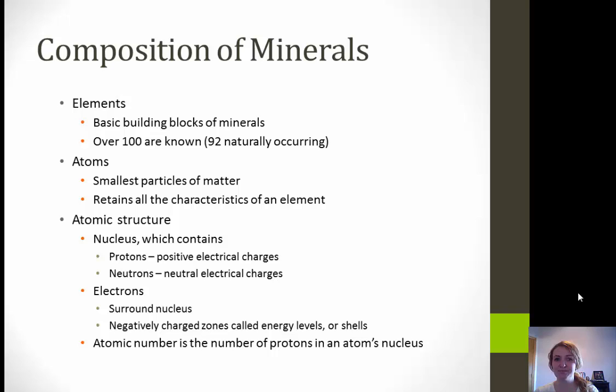First, we have elements — these are the basic building blocks of minerals. There are over 100 known, and 92 of those are naturally occurring. Next, we have atoms, which are the smallest particles of matter and retain all the characteristics of an element. Next, atomic structure: we have the nucleus, which contains the protons and neutrons. Protons have a positive charge, neutrons are neutral, and then we have electrons which surround the nucleus and are negatively charged, with energy levels or shells going outward.